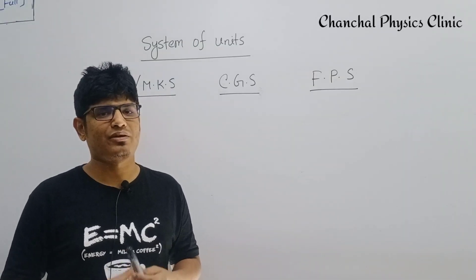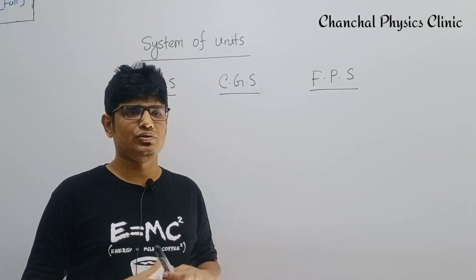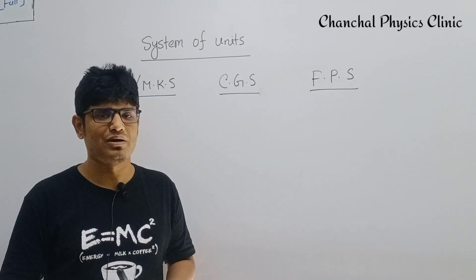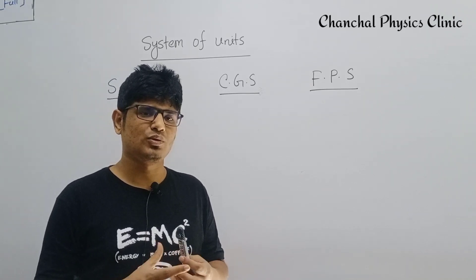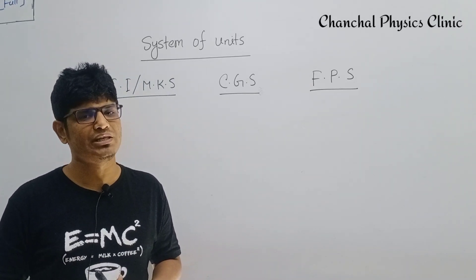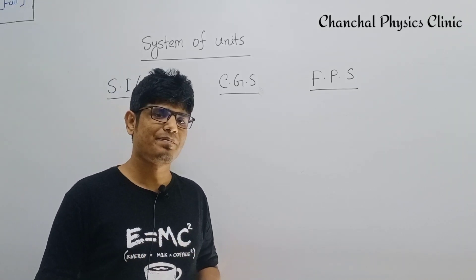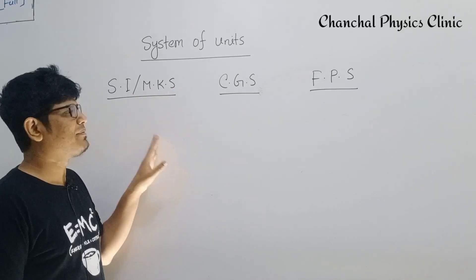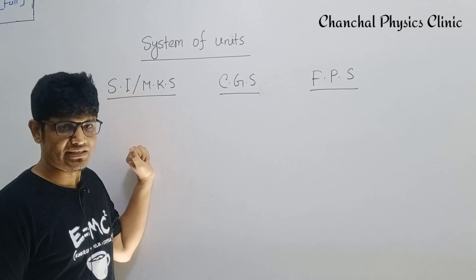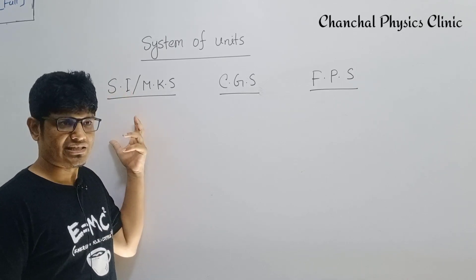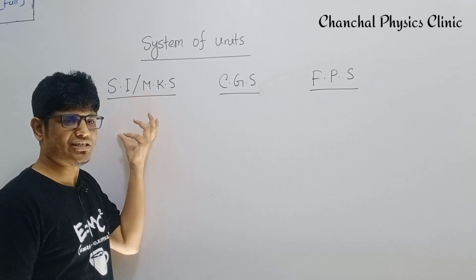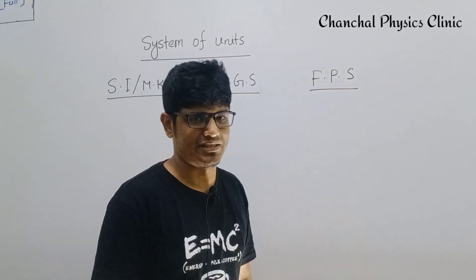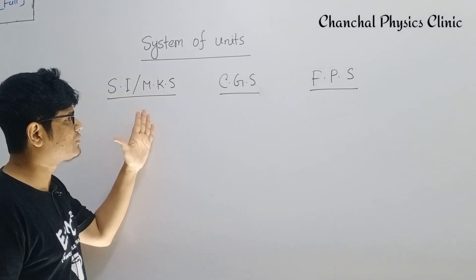In physics we can see three different unit systems. We have the MKS system, which is the same as the SI system — SI stands for International System. Then we have the CGS system and the FPS system. We need to understand which system to use.